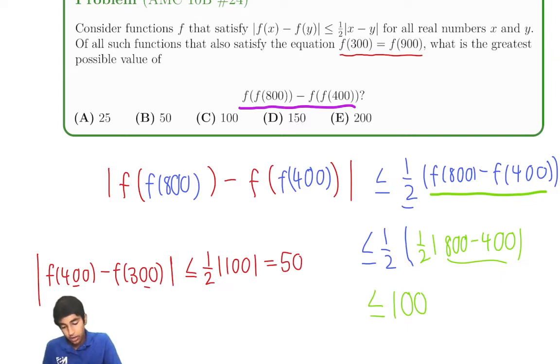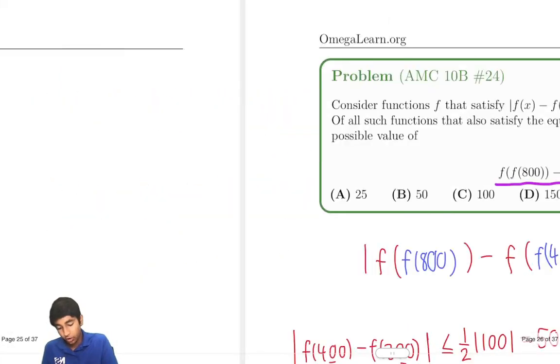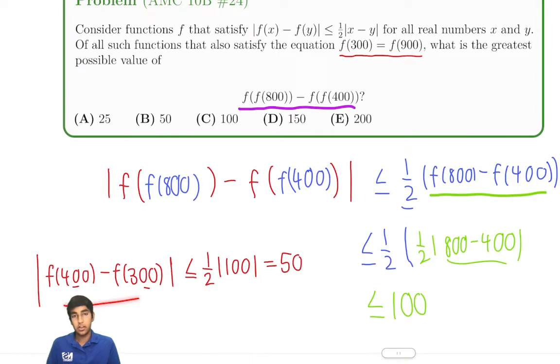So that means we know that these two cannot differ by more than 50, the absolute value of their difference. It's less than or equal to 50.